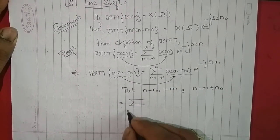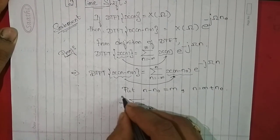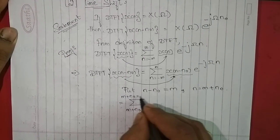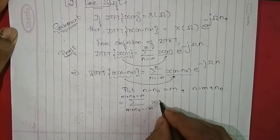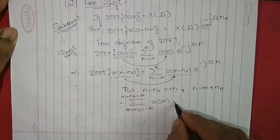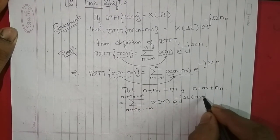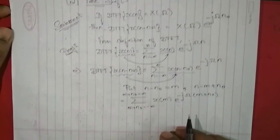So now in case of n we are writing m+n0, therefore summation m+n0 varying from minus infinity to m+n0 varying up to plus infinity. And x(m) because n-n0 is m, e^(-jω(m+n0)). I am replacing it by m+n0.